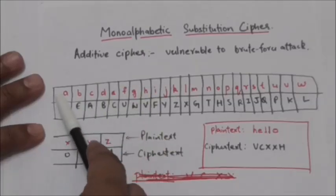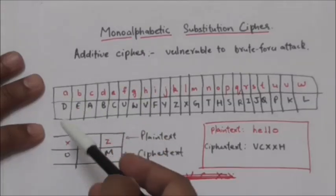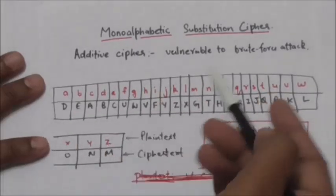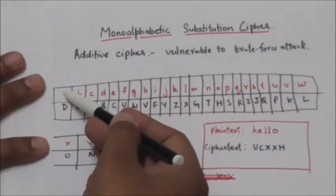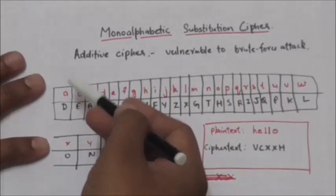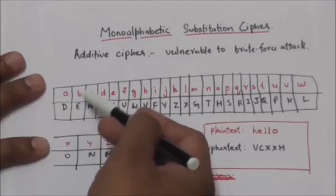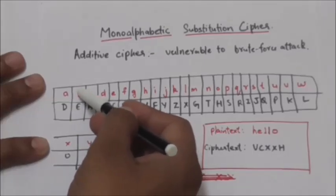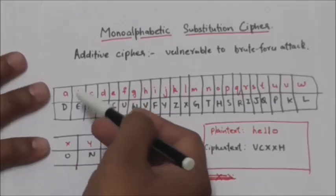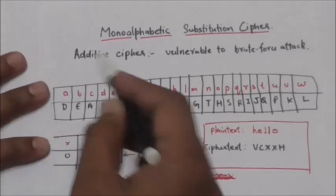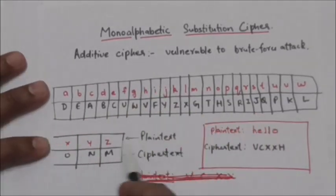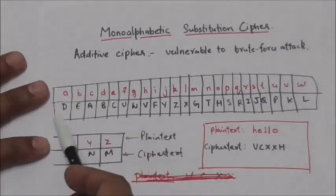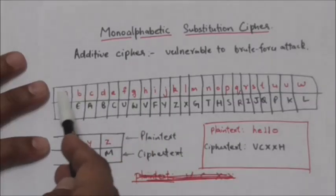Here you can see this table showing a mapping between each plaintext character and the corresponding ciphertext character. For example, plaintext character A will be encrypted to ciphertext character D, and plaintext character B will be encrypted to ciphertext character E.